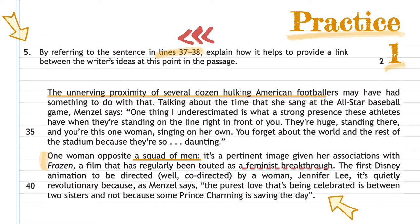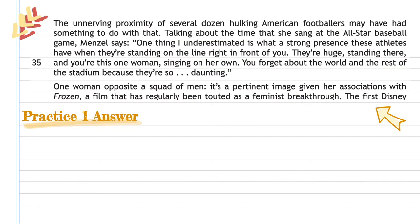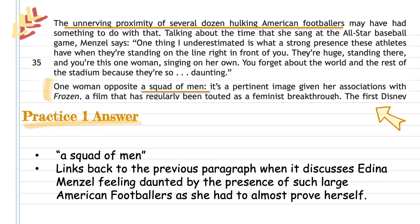Reading forward, it says 'the first Disney animation to be co-directed by a woman, Jennifer Lee. It's quietly revolutionary because, as Menzel says, the purest love that's being celebrated is between two sisters and not because some prince charming is saving the day.' So I underline that — the dotted underline indicates it links forward, and the solid underline indicates it links back. Now I do the answer. I quote 'a squad of men' and say it links back to the previous passage when it discusses Adina Menzel feeling daunted by the presence of such large American footballers as she had to almost prove herself.